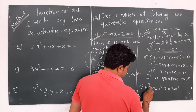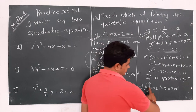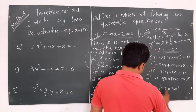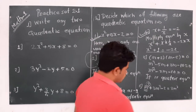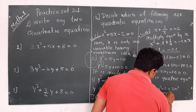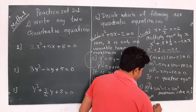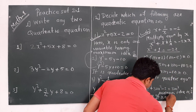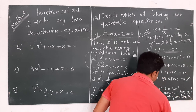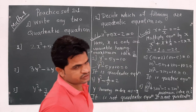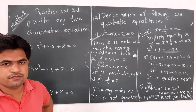The last one: the maximum index here is 3. When we subtract, minus 2m² remains on one side. Since the maximum index is 3, this is not a quadratic equation. We have finished the problem set of Practice Set 2.1. Thank you.